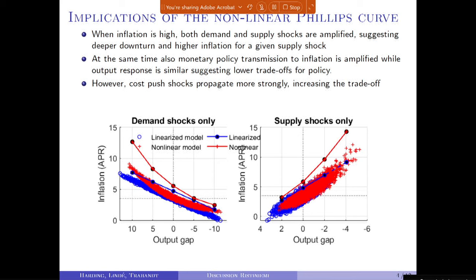The implications of having such a nonlinear model: when inflation is high, both demand and supply shocks get amplified, suggesting that for a given supply shock with a deeper downturn and higher inflation, the Phillips curve becomes steeper and steeper. At the same time, monetary policy transmission to inflation is amplified — the impact of policy shocks on inflation is actually larger, so you can stabilize inflation better with lower output cost. But once you account for cost-push shocks propagating more strongly than monetary policy shocks, putting the two together actually increases the trade-off.